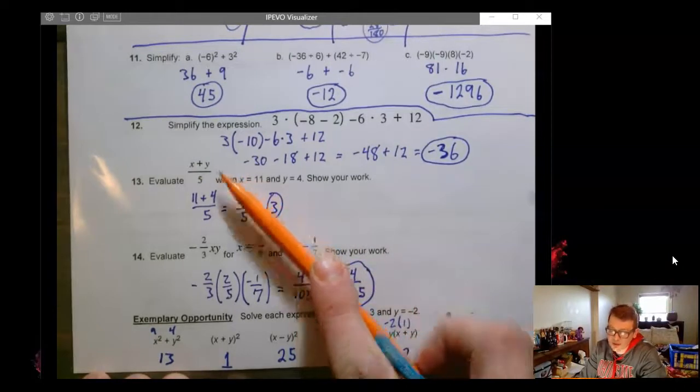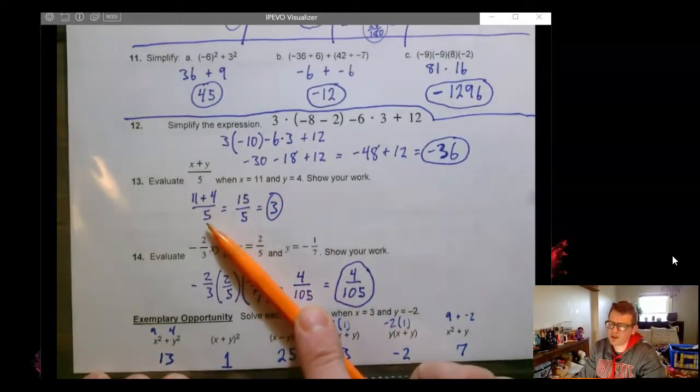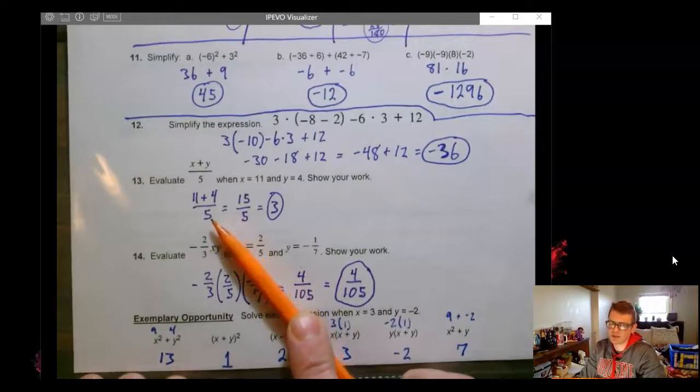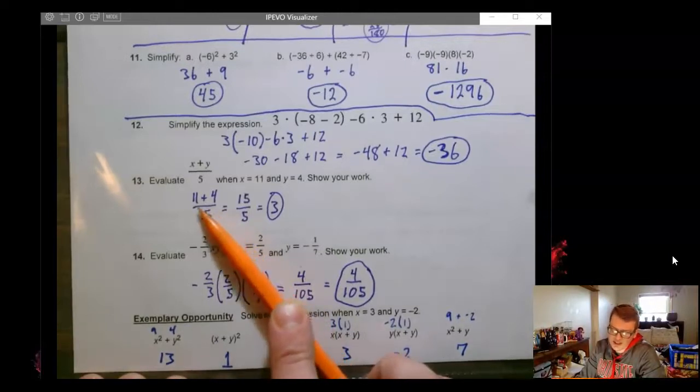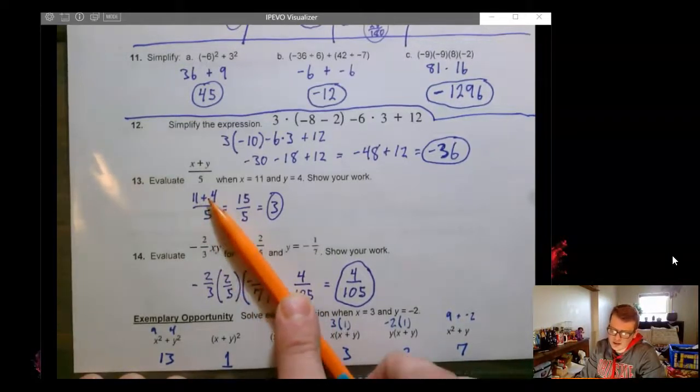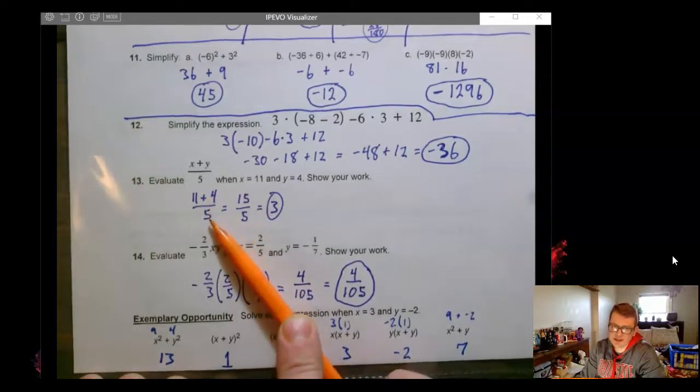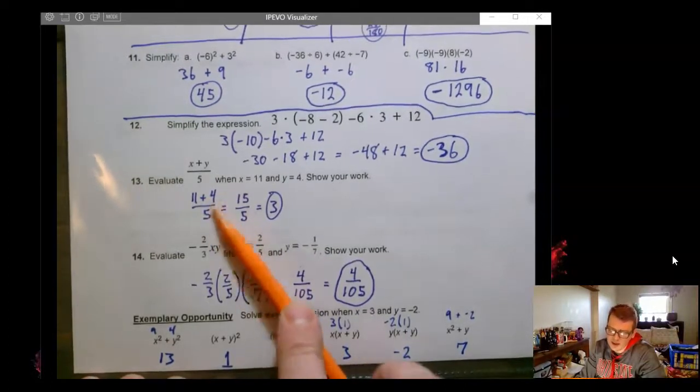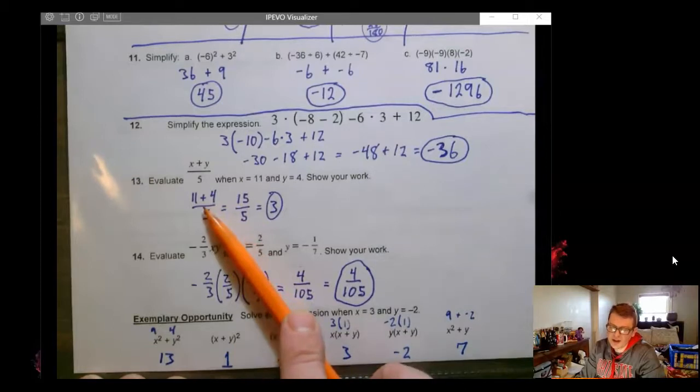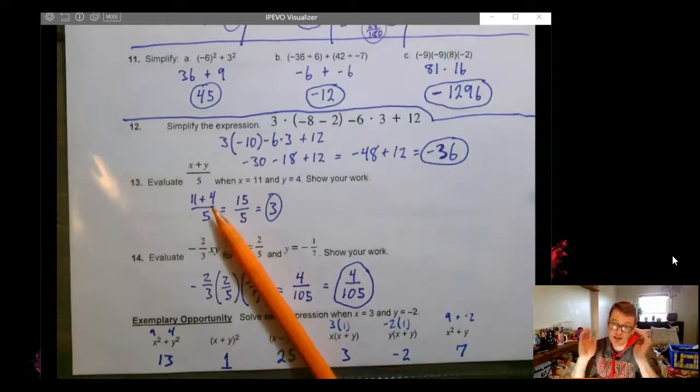One thing that caught some of us is we have to add before we divide. Even though that's not how the order of operations tells us to do it. We want to simplify before we do a division that's set up as a fraction. So if we were to write this out horizontally, 11 plus 4 would actually need to go into parentheses.